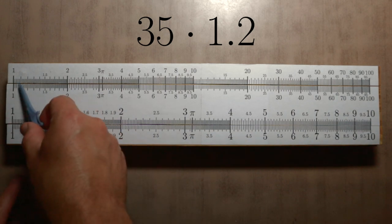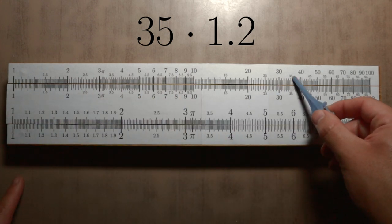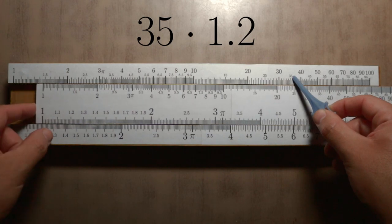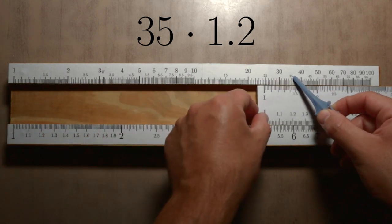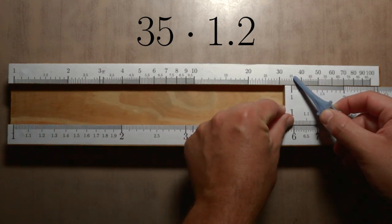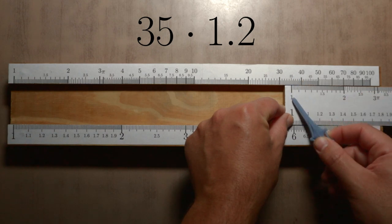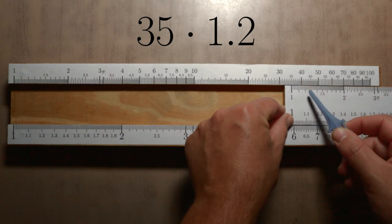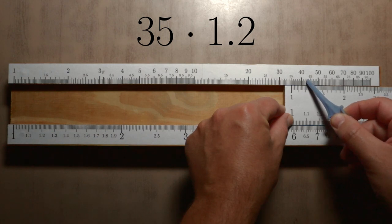We look for 35 in the upper part and we match it with the 1 of its scale that moves. We move around until 1.2. Immediately above, in the original fixed scale, we have the result: 42.